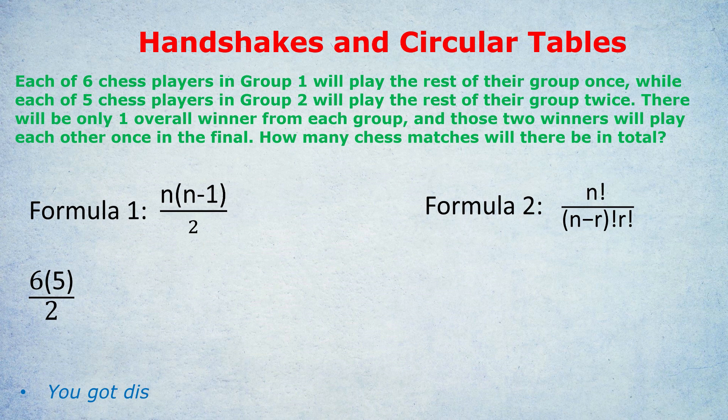Group two sounds harder because they're going to play the rest of the group twice. But don't be intimidated by that. Just pretend they're going to play the rest of the group once. You would still use the same formula. If you're choosing formula one, five times four divided by two. If you're using formula two, five choose two, and you get the same answer for both: 10. But then that's going to happen twice. It's like if in question one I said you're going to handshake each other twice, you get the answer 45 times two.